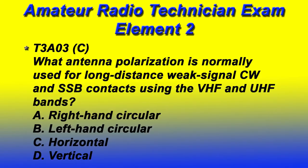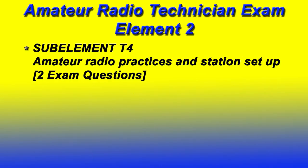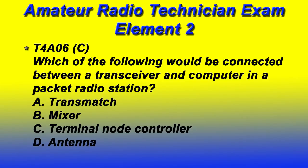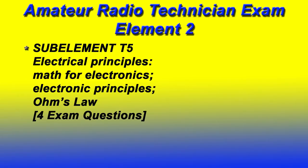T4 involves amateur radio practices and station setup; there will be two questions from this section. T5 involves electrical principles, including math for electronics, electronic principles, and Ohm's Law. There'll be four questions from this part of the exam.